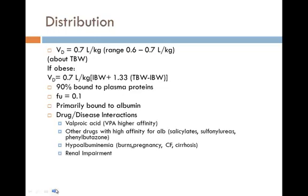There are many drug and disease interactions associated with phenytoin's protein binding. It is highly protein bound, and there are many interactions specifically with other anti-epileptics, which are often given together in difficult-to-manage patients. Valproic acid has a higher affinity for albumin than phenytoin and may displace phenytoin from its binding sites. Other drugs with high albumin affinity include salicylates, sulfonylureas, and phenylbutazone. In hypoalbuminemia, renal impairment, or hepatic impairment, you can see an increase in the fraction unbound of phenytoin, which is a significant concern given how highly bound it normally is.